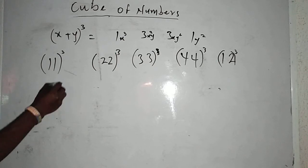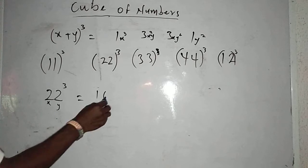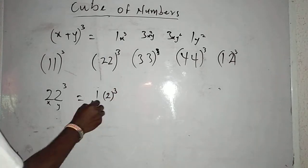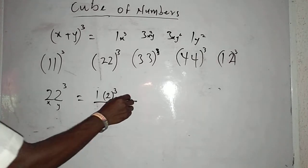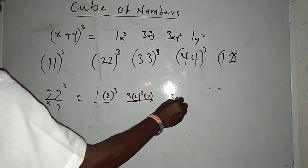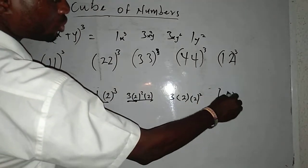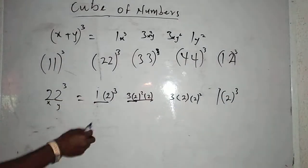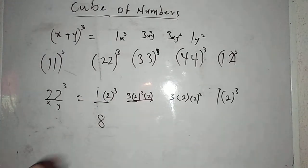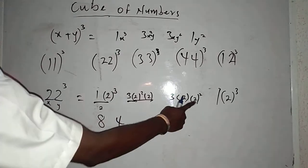Now 22 raised to power 3 — the same way. My x is 2 and my y is 2. First stand: 1 bracket of 2 raised to power 3. Second stand: 3 bracket of 2 squared bracket of 2. Third stand: 3 bracket of 2 bracket of 2 squared. Last stand: 1 bracket of 2 raised to power 3. Now: 2 times 2 times 2 is 8. 8 times 1 is 8. This also: 2 times 2 is 4, times 2 is 8, times 3 is 24.